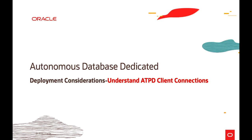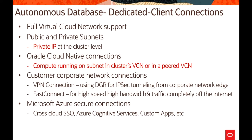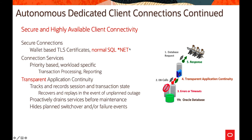Now focusing on client connections for the dedicated environment: it provides full VCN support, public and private subnets, and Oracle Cloud-native connections for compute running in the cluster VCN or a peered VCN. Corporate network connections work via VPN, FastConnect, or Microsoft Azure secure connections. All connections are secure by default — wallets are based on TLS certificates, and SQL*Net both modes are available. Connection services can use priority-based or workload-specific connections for transaction processing or reporting.